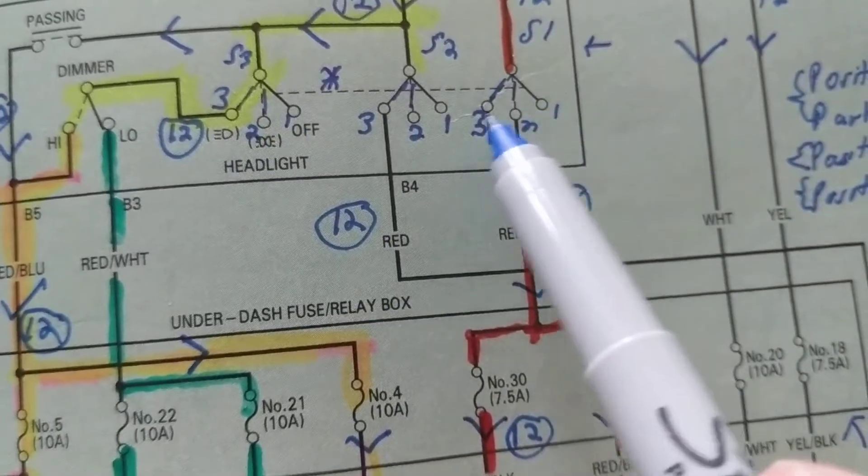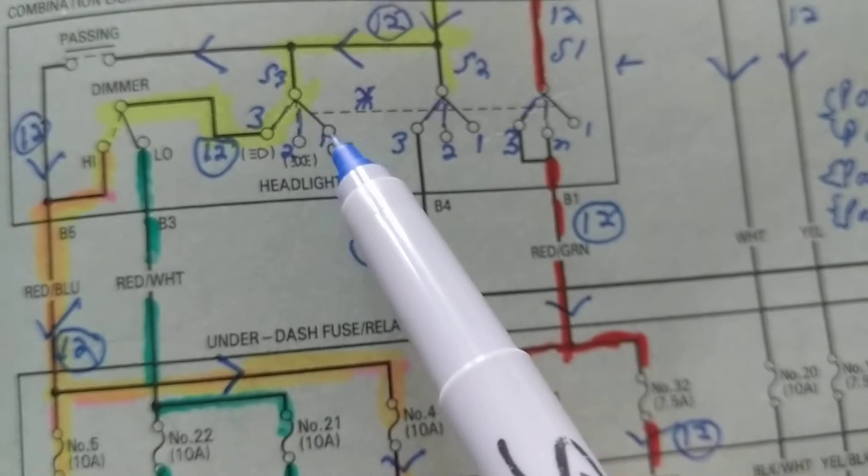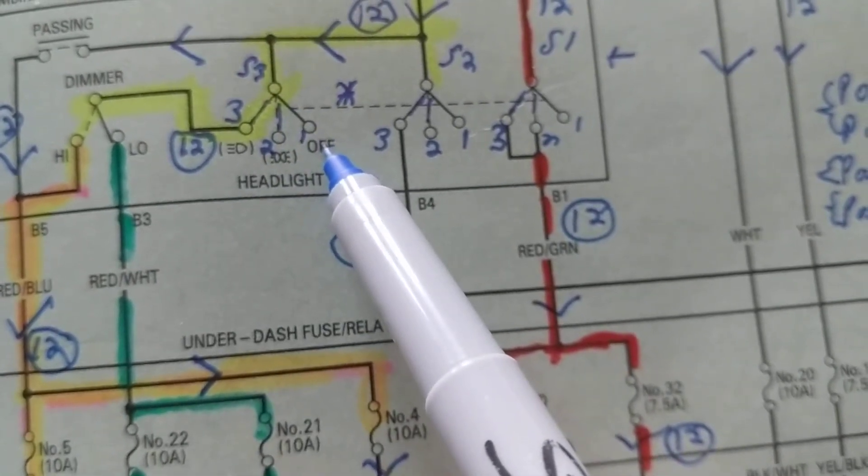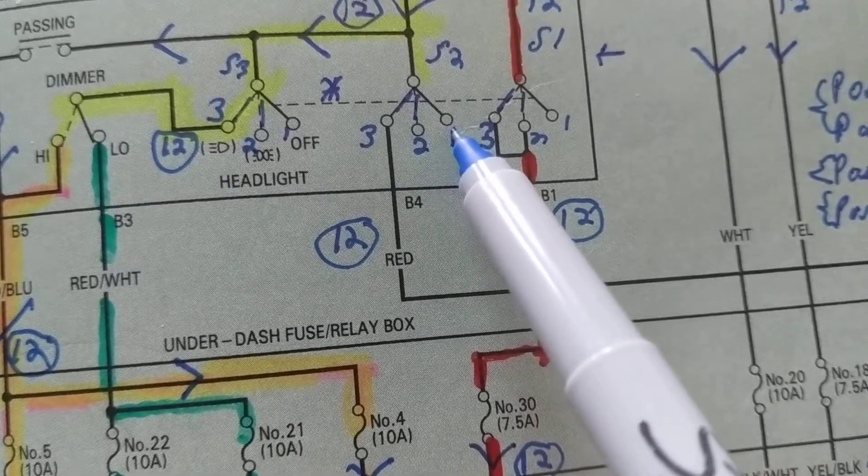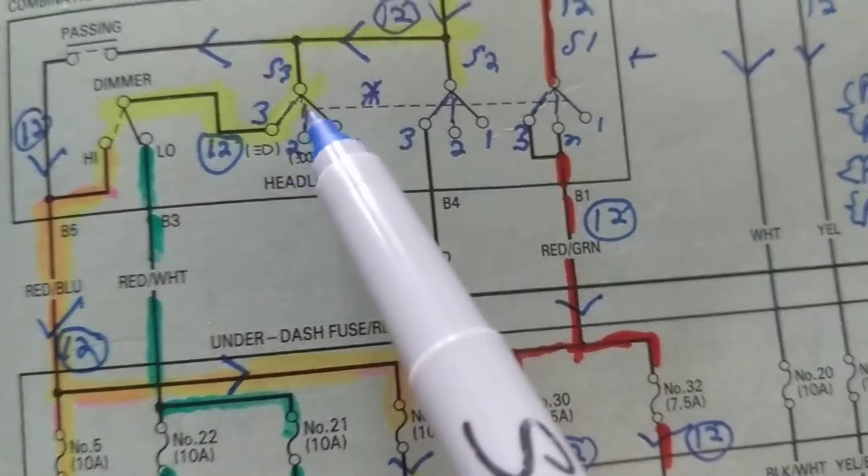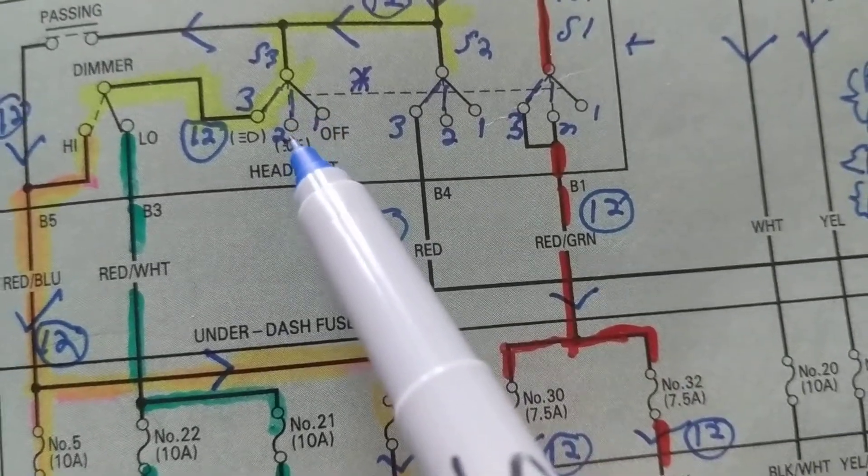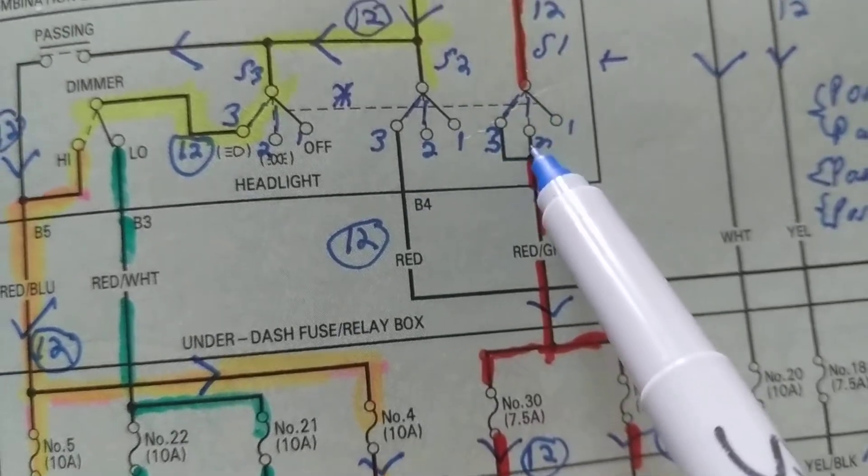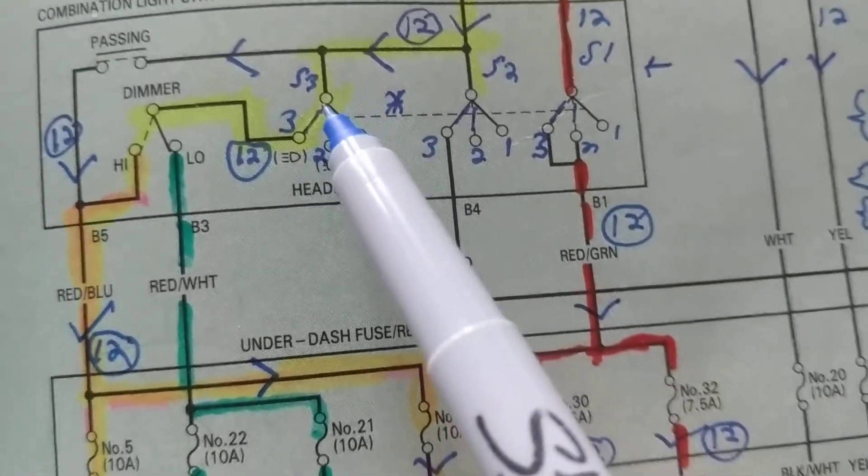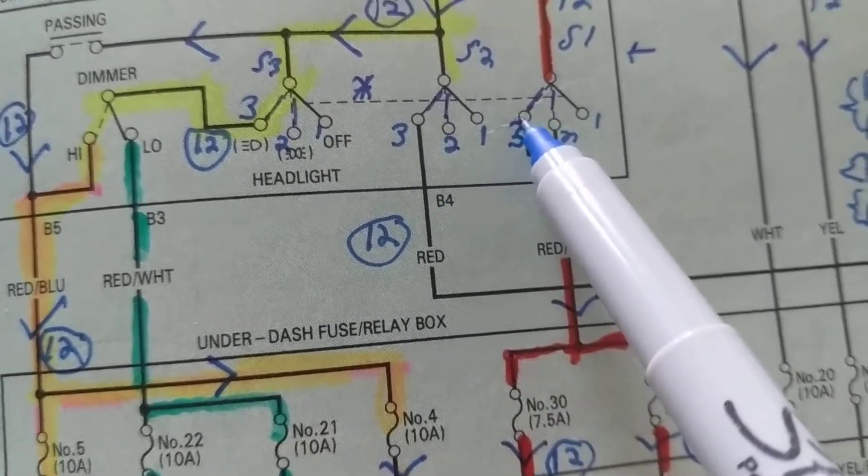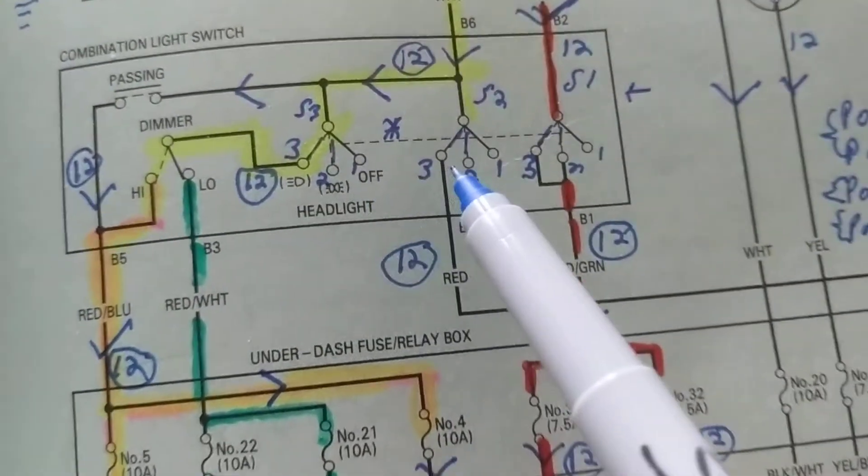Whenever I put this part of the switch to terminal 1, that means this will go to terminal 1, this will go to terminal 1, all at the same time. When I put this to terminal 2, this will go to terminal 2. When I put this to terminal 3, this will go to terminal 3, simultaneously, together at the same time.